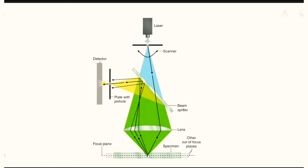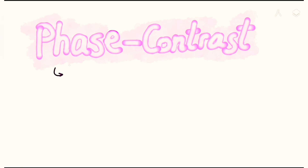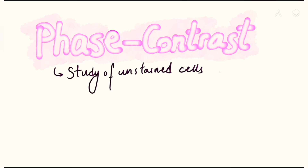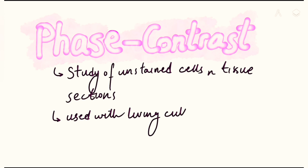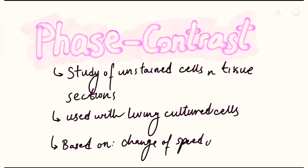This image shows how the confocal microscope works. Next we have the phase contrast microscope, also one of the specialized types of light microscope. Its main purpose is the study of sections of cells and tissues that are not stained and remain unstained. This is used with living cultured cells for various purposes, and it is based on the principle of change of speed of light as it travels through different surfaces and different types of components of the tissue.